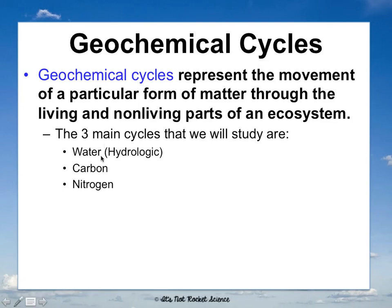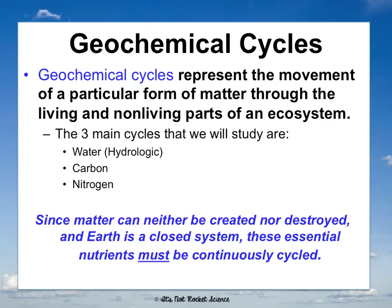These are definitely the three main cycles. A lot of molecules that have nitrogen in them also have phosphorus and sulfur, so when nitrogen is cycling there is some cycling of phosphorus and sulfur. We're just going to zoom in on these three main ones, even though there are others.